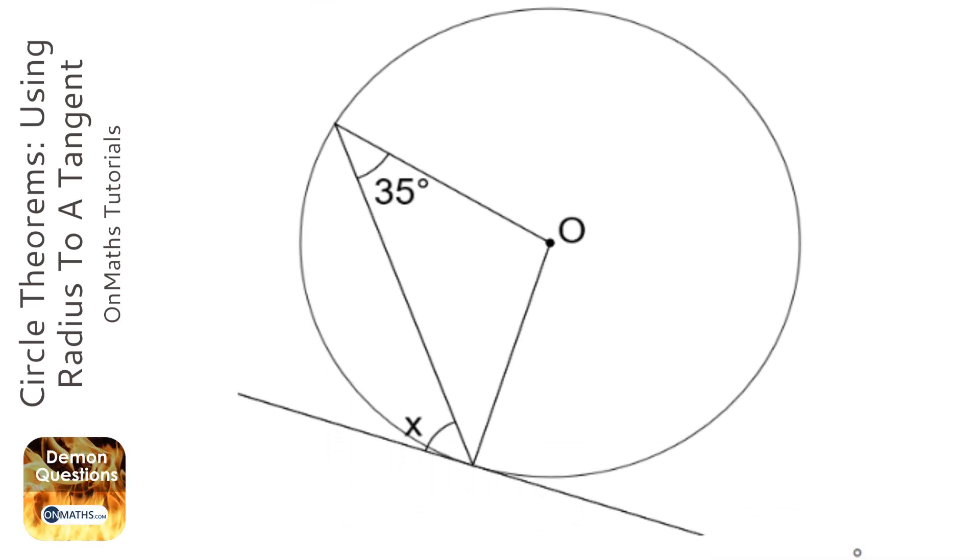OK, so for this question there's a couple of things we need to do. First of all, we need to identify the fact that this is an isosceles triangle and the reason is they are both radii, therefore they are the same length. That means that this angle here is also 35 degrees. And you need to make sure you write down the fact that that is an isosceles triangle in your working out.